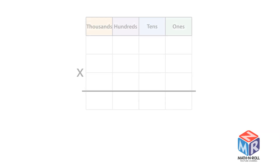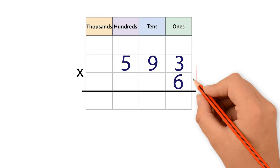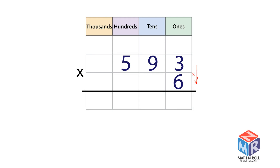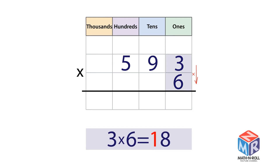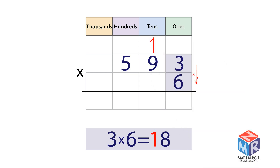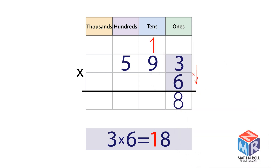Let's try another example: 593 × 6. Multiply the 1s. 3 × 6 ones equals 18 ones. Regroup 18 ones as 1 ten and 8 ones.